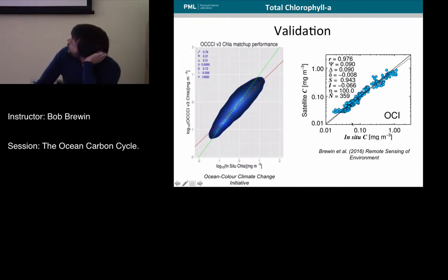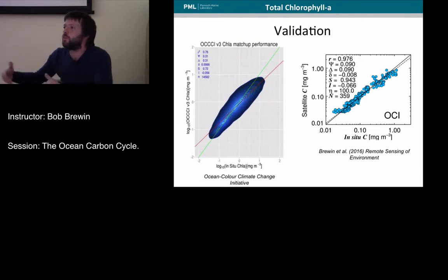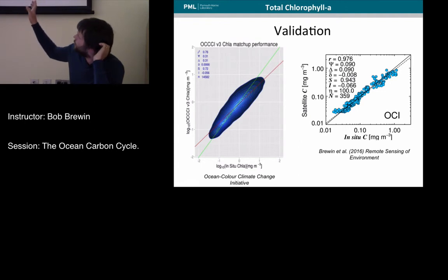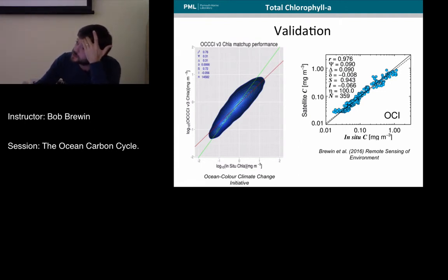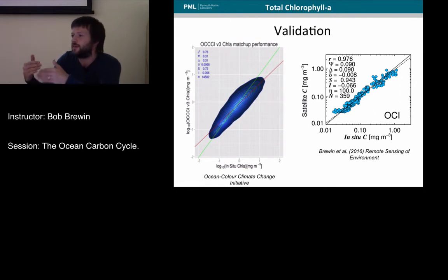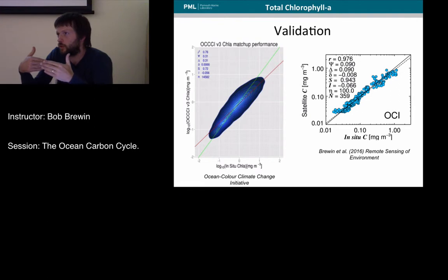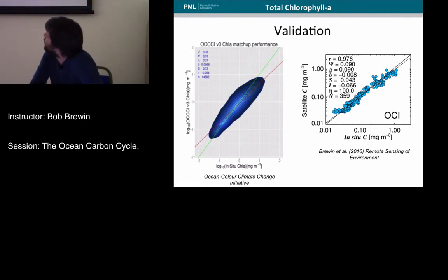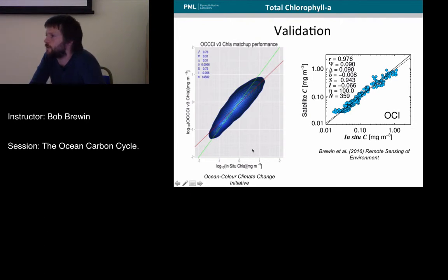There are methods being developed to improve these spatial mismatches by collecting more observations or using new systems that can sample more efficiently within a satellite pixel. This is an example from a recently published paper using underway spectrophotometry, which measures chlorophyll continuously as the ship moves. The ship can track through a pixel and get many observations within it, averaging them to get closer to representing the pixel. We found that in the open ocean, errors come down considerably when this is done — suggesting that in-situ single-point data isn't always the ground truth.